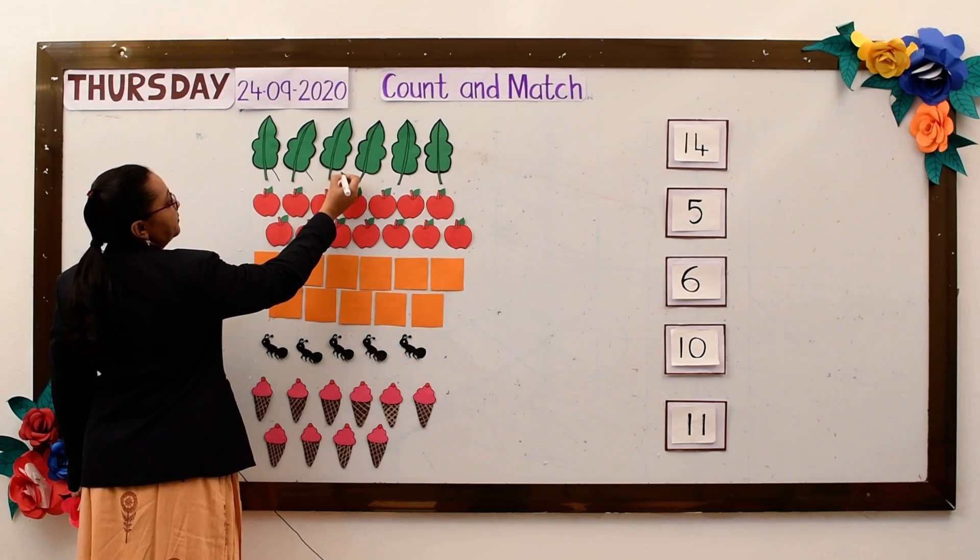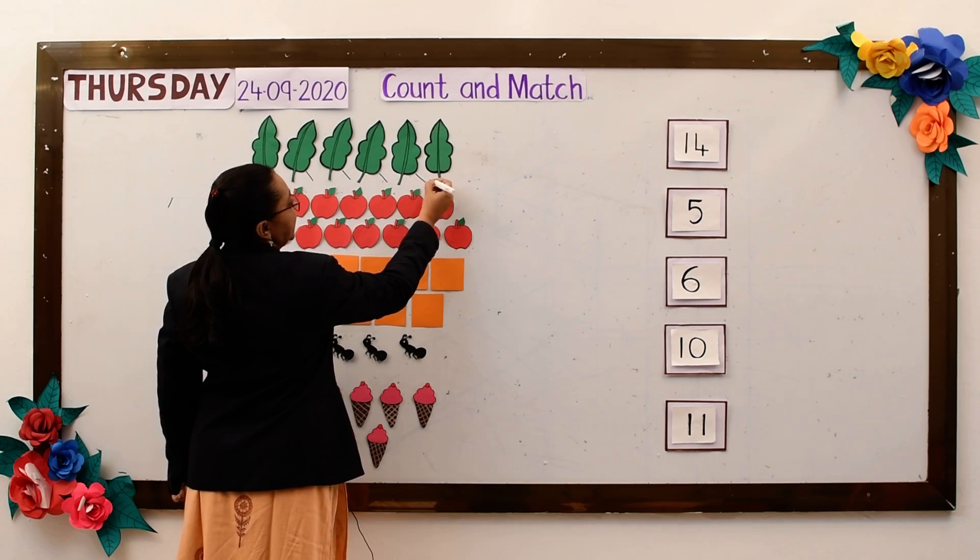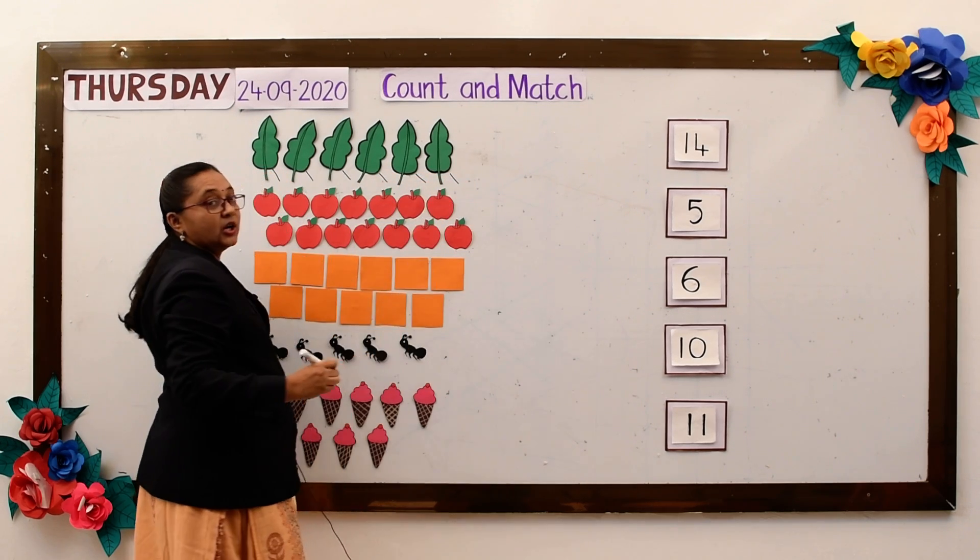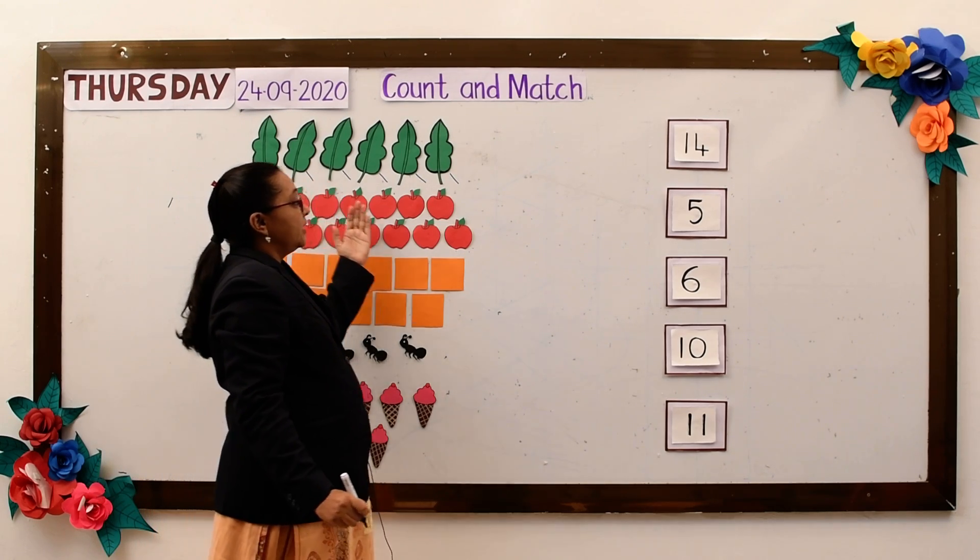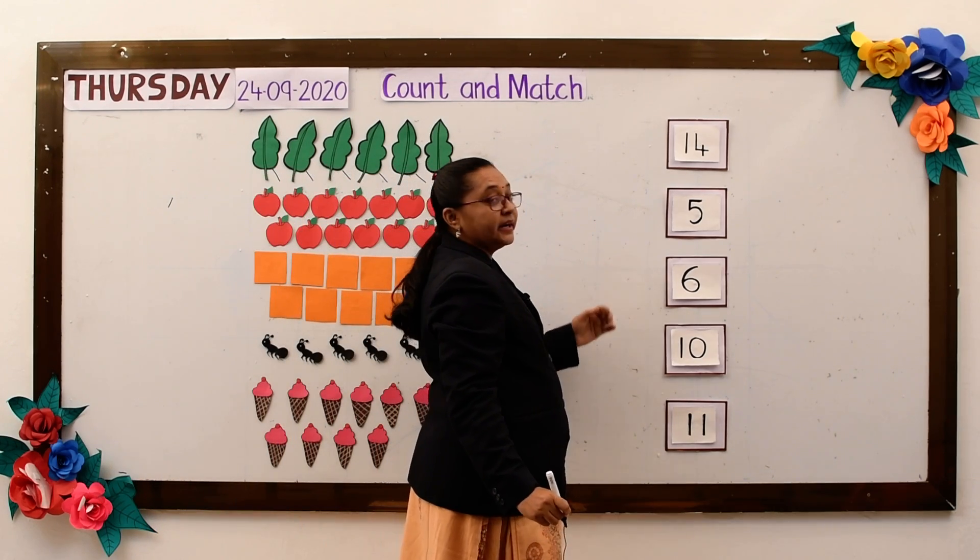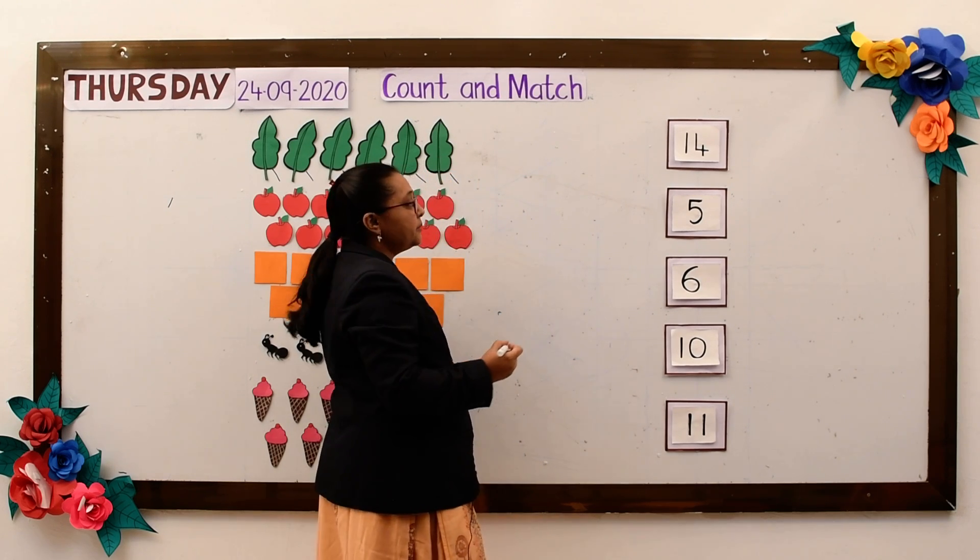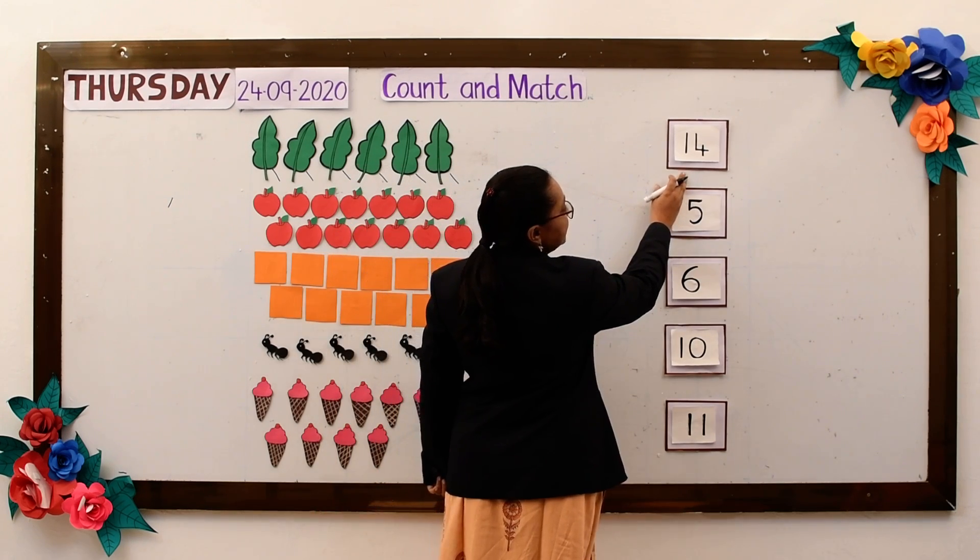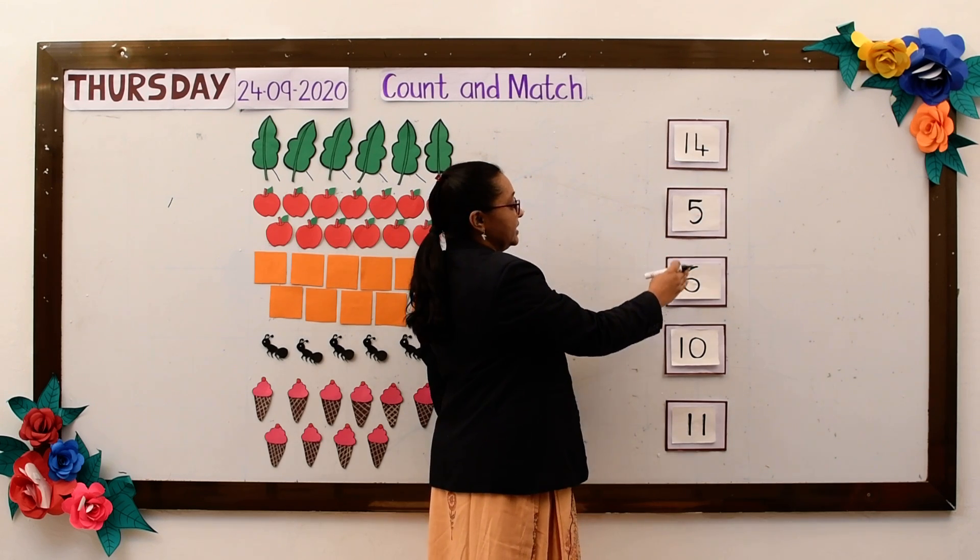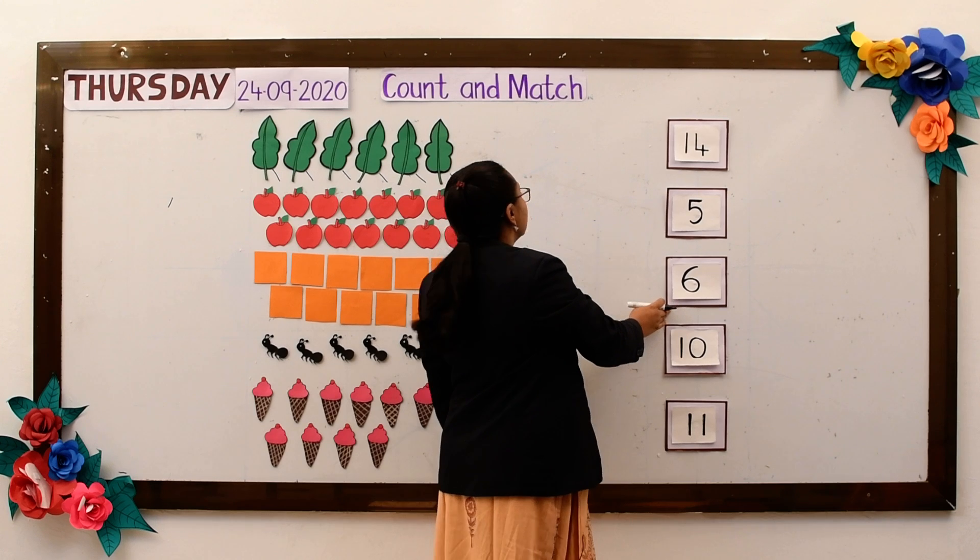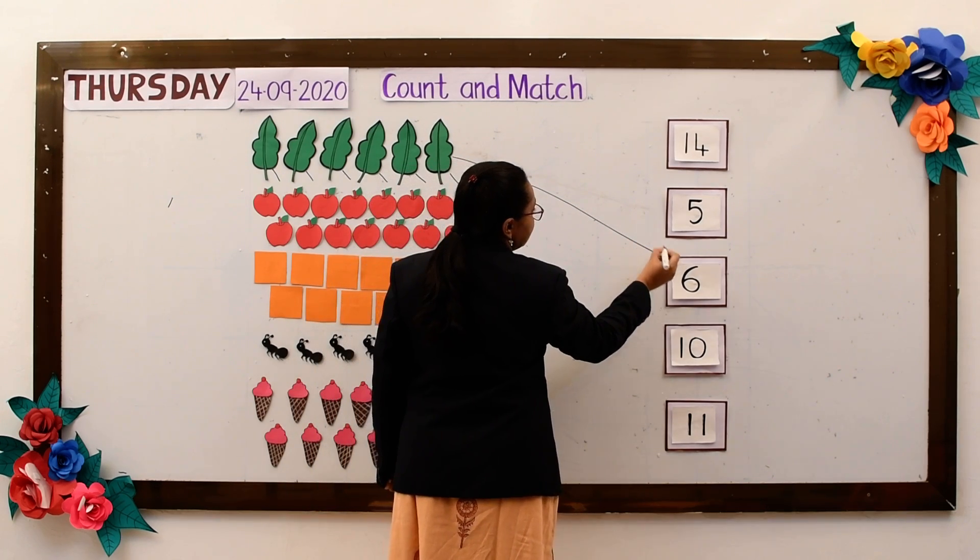1, 2, 3, 4, 5, 6. Now how many objects I have counted? 6. So I have to see here and recognize the correct number and match it to the correct number. So is this 6? No. Is this 6? No. Is this 6? Yes. So I will match it to the correct number 6.